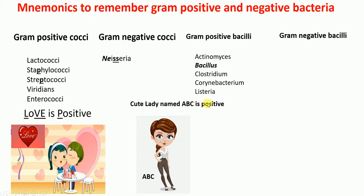In 'Cute Lady ABC is Positive': A stands for Actinomyces, B for Bacillus, C for Clostridium or Corynebacterium. Capital L stands for Listeria, and capital C for Clostridium or Corynebacterium. So: Cute = C for Clostridium or Corynebacterium, Lady = L for Listeria, ABC = Actinomyces, Bacillus, Clostridium or Corynebacterium, and Positive means gram-positive.